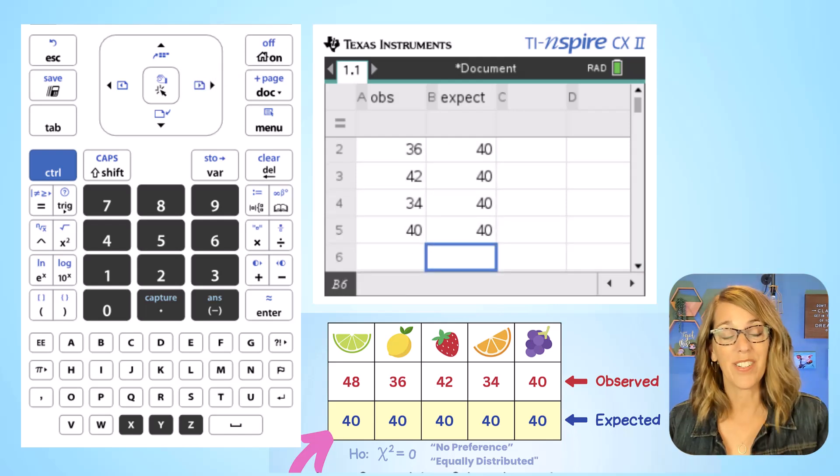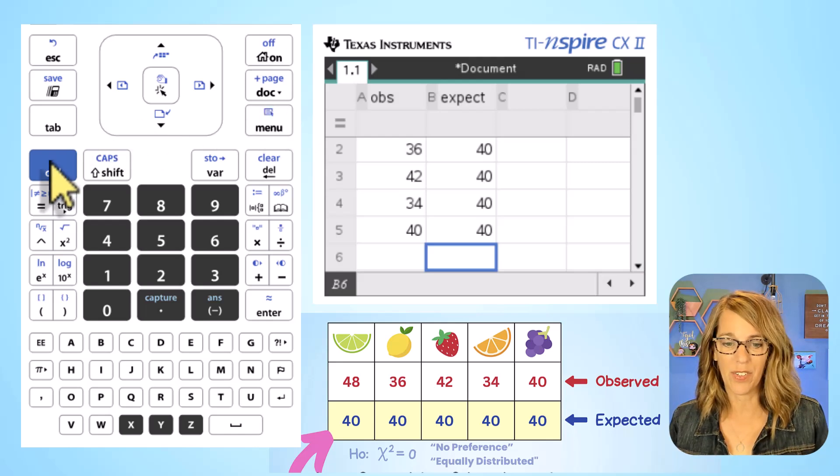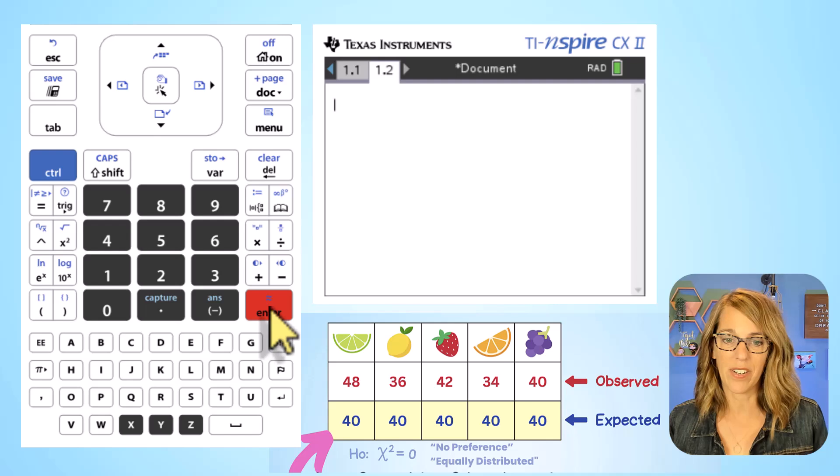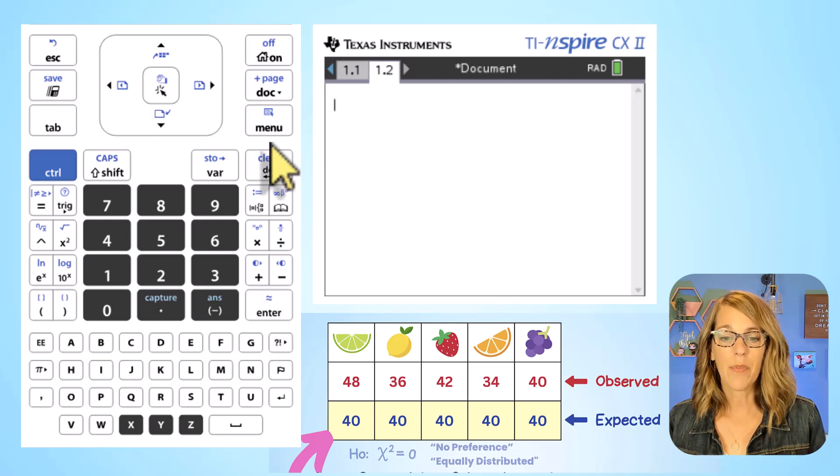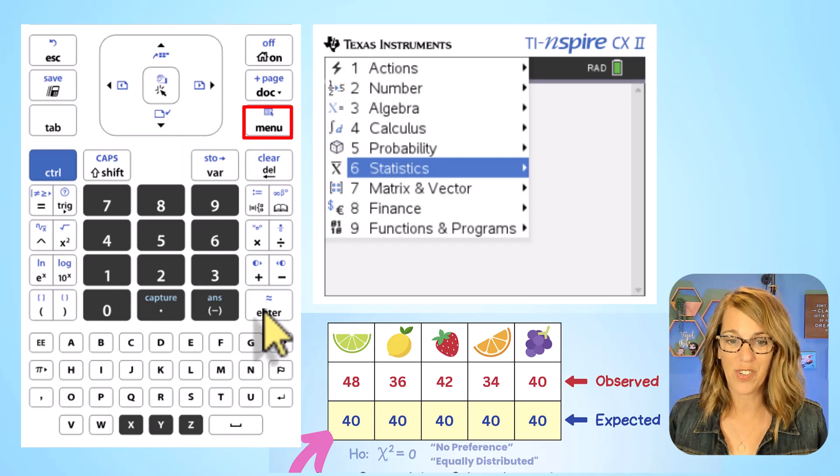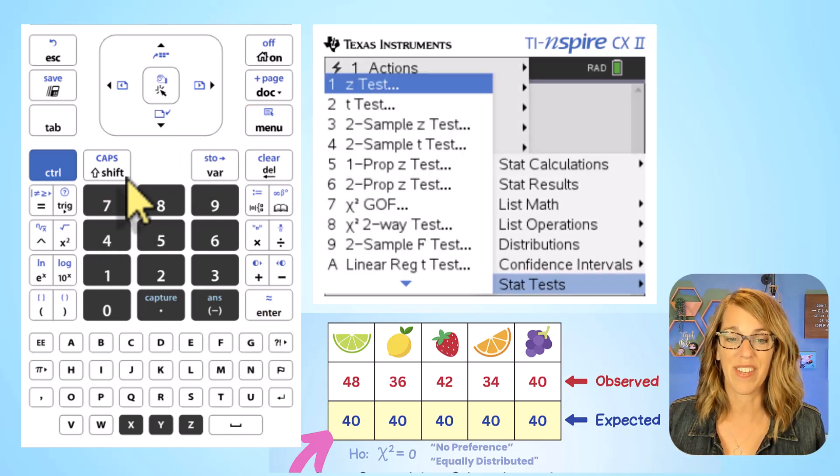And we're just about ready to run that test. I'm going to add a calculator page here, so let's go ahead and do control add page. I want to add a calculator page, so enter to choose number one. I want to run some tests, so I'm going to go to menu. These live in my statistics menu, so I'll choose number six, and stat tests which are number seven.